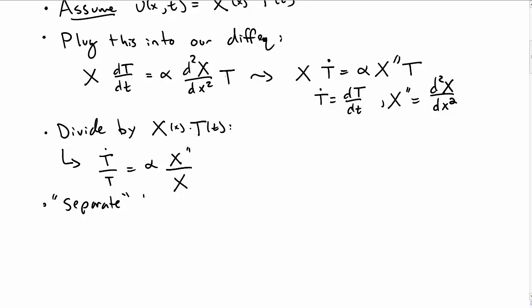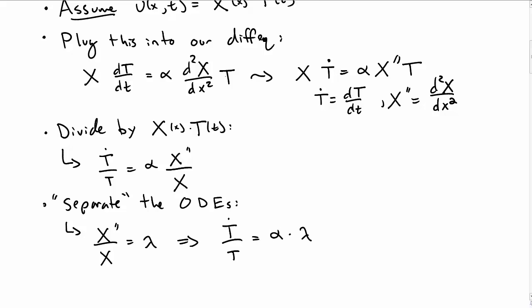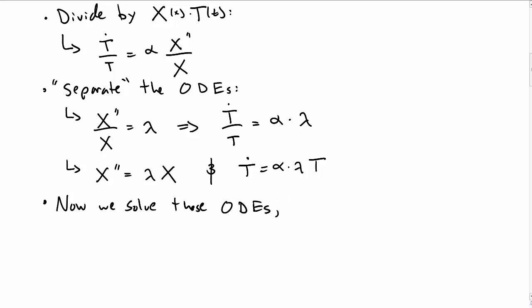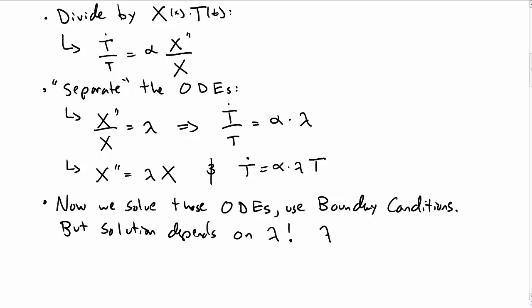We're now ready to separate into ordinary differential equations. We write X-double-prime over X equals lambda, and T-dot over T equals alpha times lambda. In standard form: X-double-prime equals lambda X, and T-dot equals alpha lambda T. We now have two ODEs. The solutions will depend on whether lambda is zero, greater than zero, or less than zero — we don't know yet, so we go through each case.